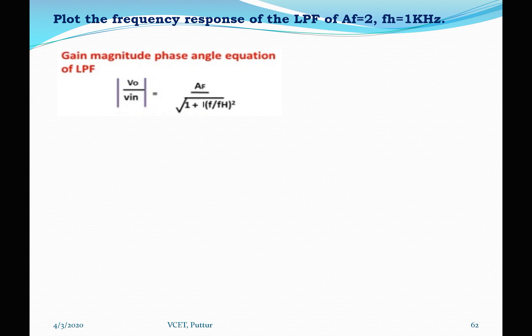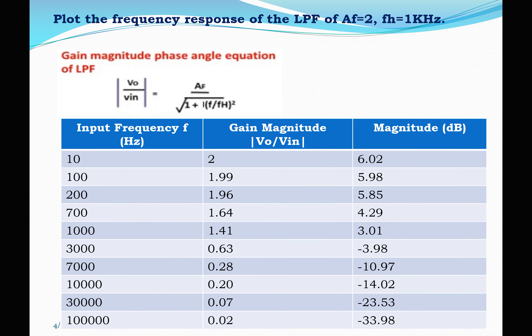The next question asks us to plot the frequency response of a low pass filter having a passband gain of 2 and FH = 1 kHz. For a first-order low pass filter, V0/VIN = AF / √(1 + (F/FH)²). We plot a tabular column with columns for input frequency, gain magnitude, and gain in dB. I will consider frequencies from 10 Hz up to 100 kHz: 10, 100, 200, 700, 1k, 3k, 7k, 10k, 30k, and 100k Hz.